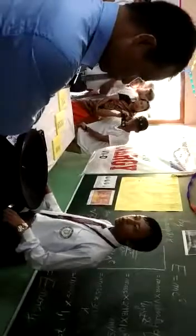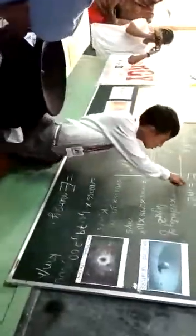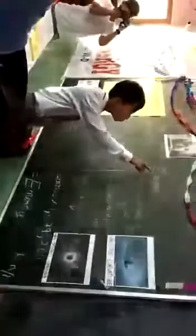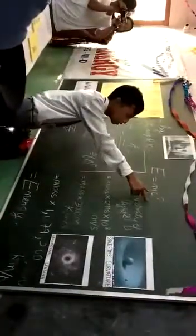Stephen Hawking was further researching on this topic, but he unfortunately died in the year 2018, so his research could not be completed. The theory of relativity's most basic equation is E equals mc squared.